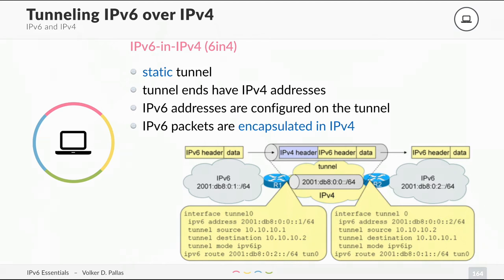The encapsulated packets are sent to the other router on the right side, then drop out as IPv6 packets in the destination network. This enables IPv6 connectivity over an IPv4-only network like the internet, if you don't have any IPv6 upstream connectivity.